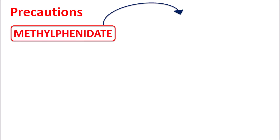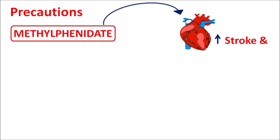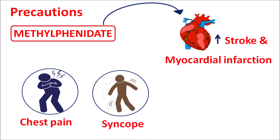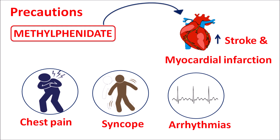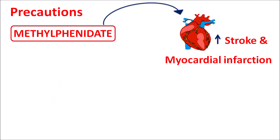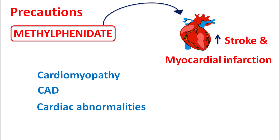One important precaution of methylphenidate is that this drug can activate not only the CNS but also stimulate the cardiovascular system. Due to its stimulant effect, methylphenidate can increase the rate of cardiac contraction, increasing the risk of stroke and myocardial infarction. If symptoms such as severe chest pain, uncontrolled syncope, or cardiac arrhythmias are observed, caution should be taken immediately. Patients with cardiomyopathy, coronary artery disease, or any structural or functional cardiac abnormalities should not use methylphenidate, as it is contraindicated in these cases.